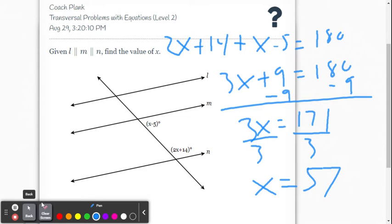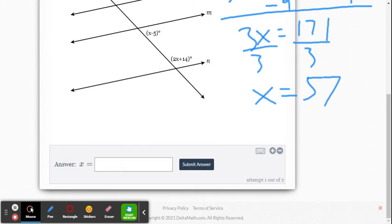So let's put that into Delta Math. Again, it already has x equals. We just have to enter the number, 57. If you want to double check it, you could substitute the 57 for x for both angles and make sure that those angles add up to 180.